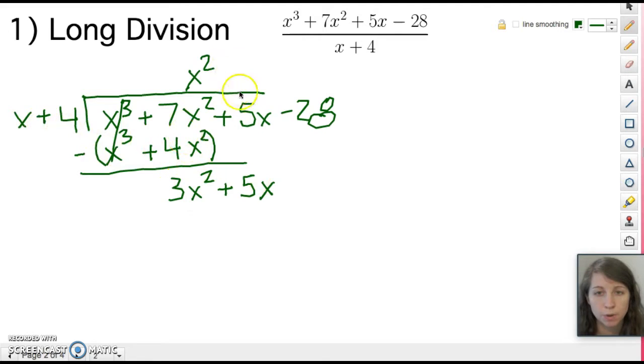So x times what equals 3x²? That would be 3x so we'll write plus 3x up here. Second step is to multiply so we have 3x times x is 3x² and 3x times 4 is plus 12x.